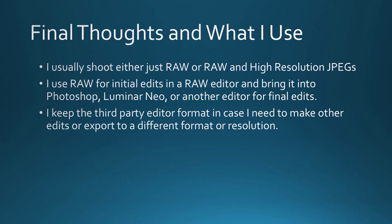Shooting RAW and JPEG also provides a form of backup while on the SD card — if something happened to the RAW image and it got corrupted, you'd still have a JPEG. If your camera uses two SD cards, back up on the second card. When you get home, offload your images right away to your hard drive and back that up to the cloud and maybe another device as well. I use RAW images for initial edits in a RAW editor, then bring them into Photoshop, Luminar Neo, or another editor for final edits. I keep the third-party editor's native format in case I need to make other edits or export to a different format or resolution.